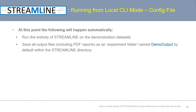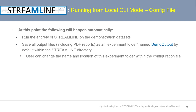This is true whether you're running Streamline locally or on an HPC using the configuration file. Users can change the name and location of the experiment folder within the configuration file, as well as change the datasets and other Streamline run parameters as desired.